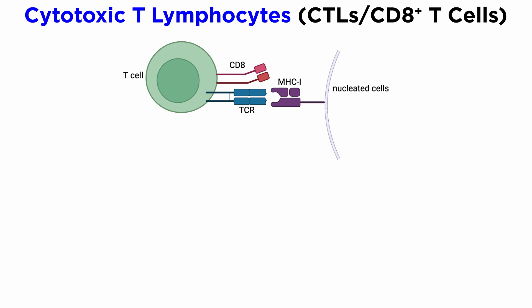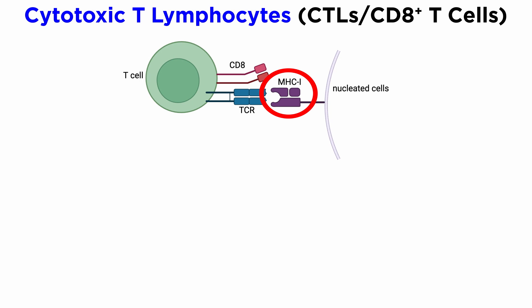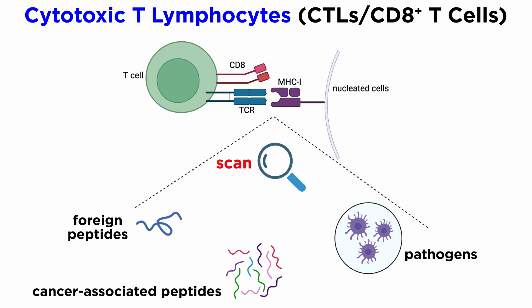Cytotoxic T-lymphocytes, or CTLs, are CD8-plus T-cells that recognize their targets via the interaction of rearranged T-cell receptors and the class 1 major histocompatibility complex. As we learned in an earlier tutorial, MHC class 1 molecules are expressed on virtually all cells in the body. This feature allows CTLs to thoroughly scan the tissues for cells expressing foreign or cancer-associated peptides. Specifically, CTLs are specialized in efficiently detecting cancerous cells or those infected with intracellular pathogens, such as viruses.